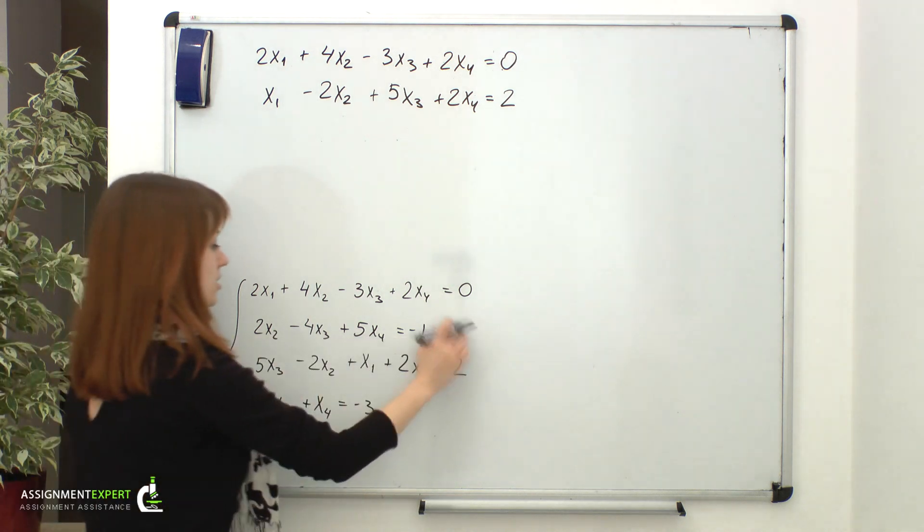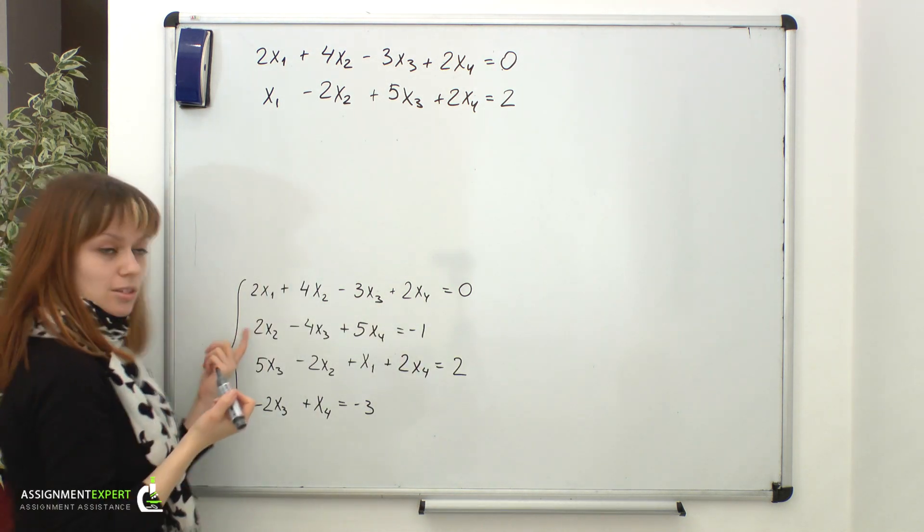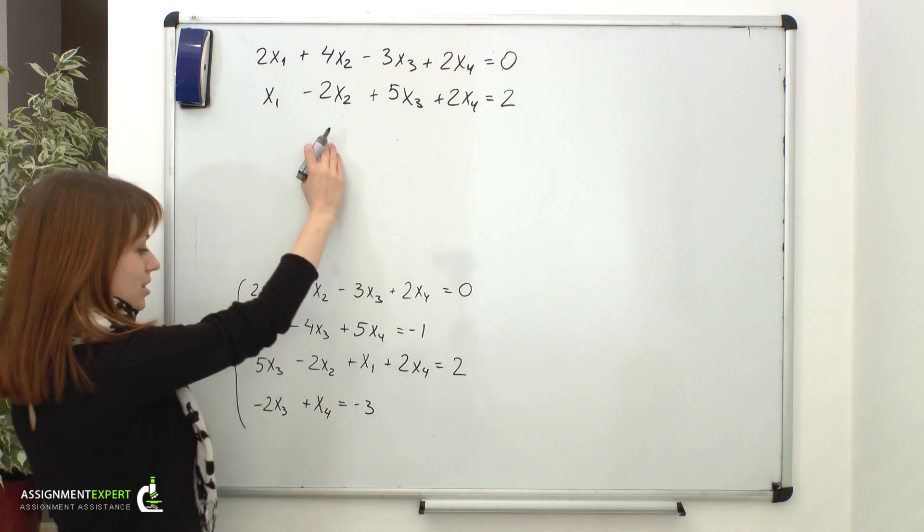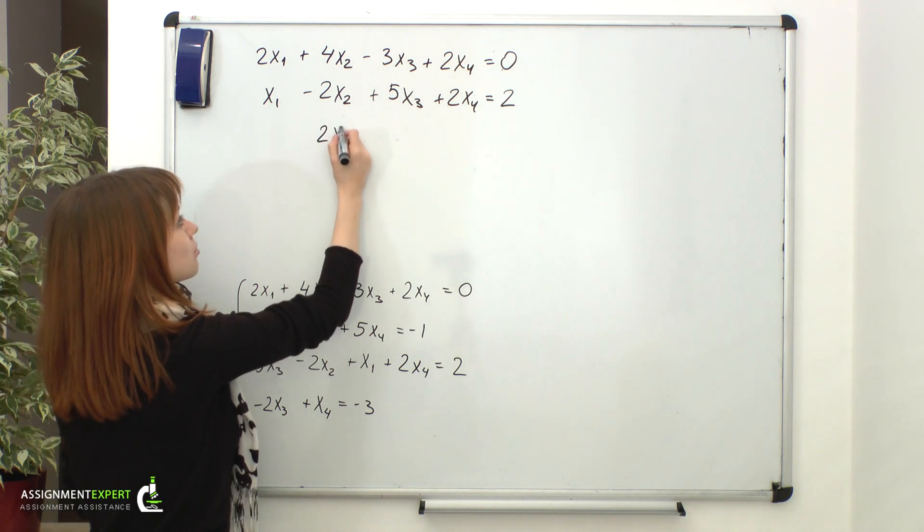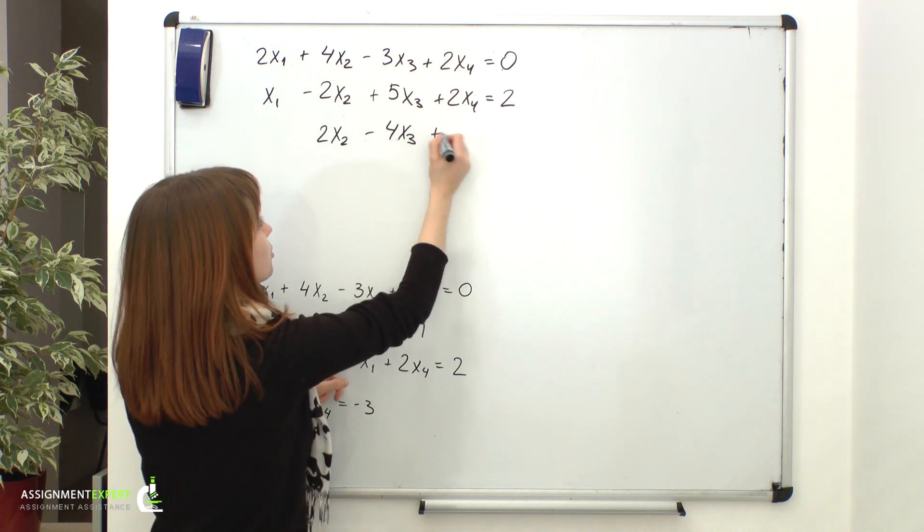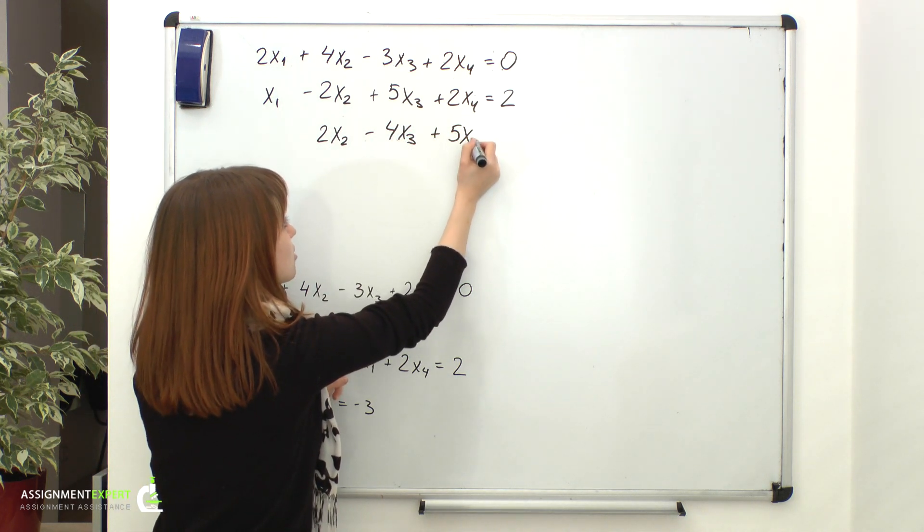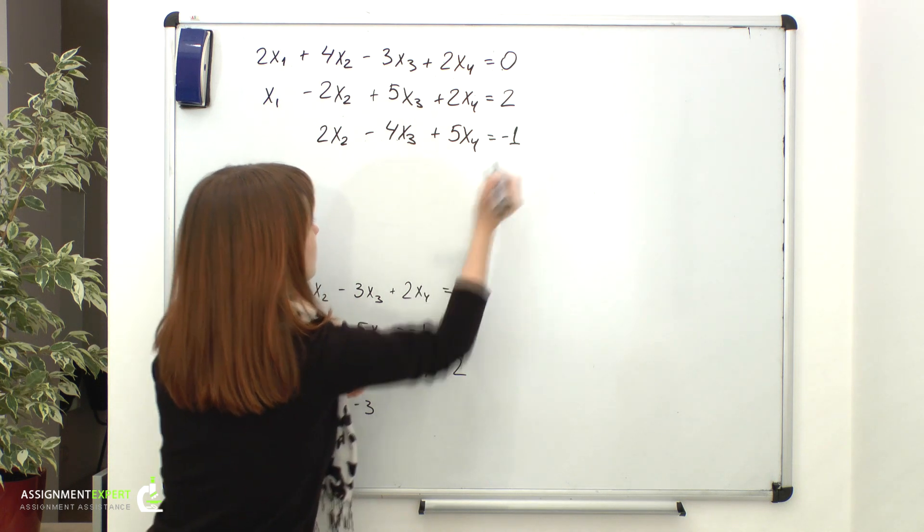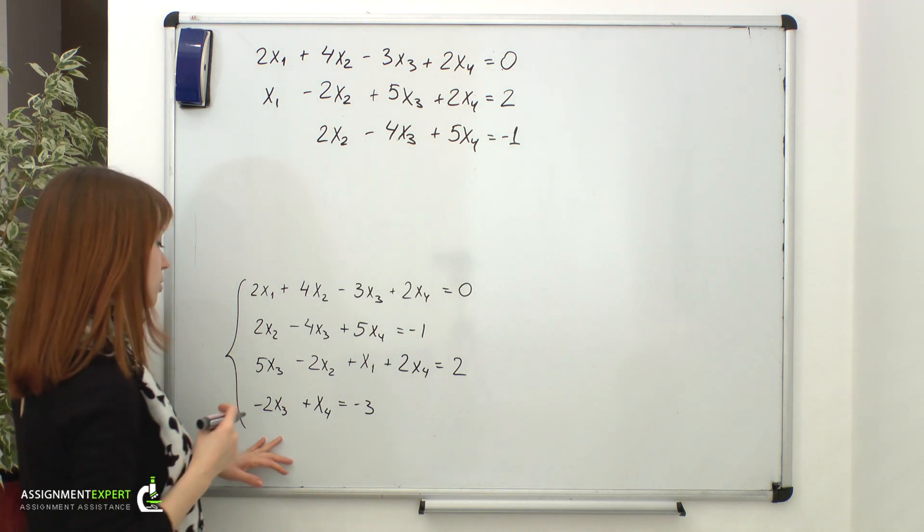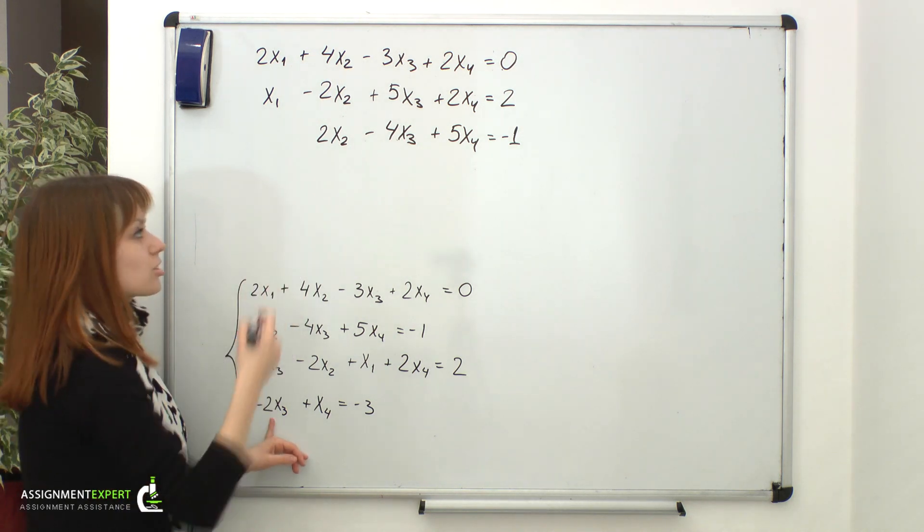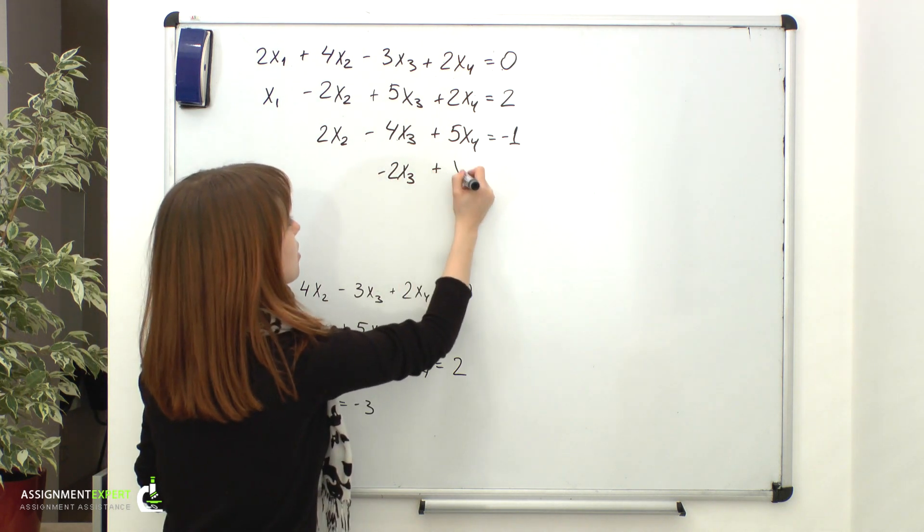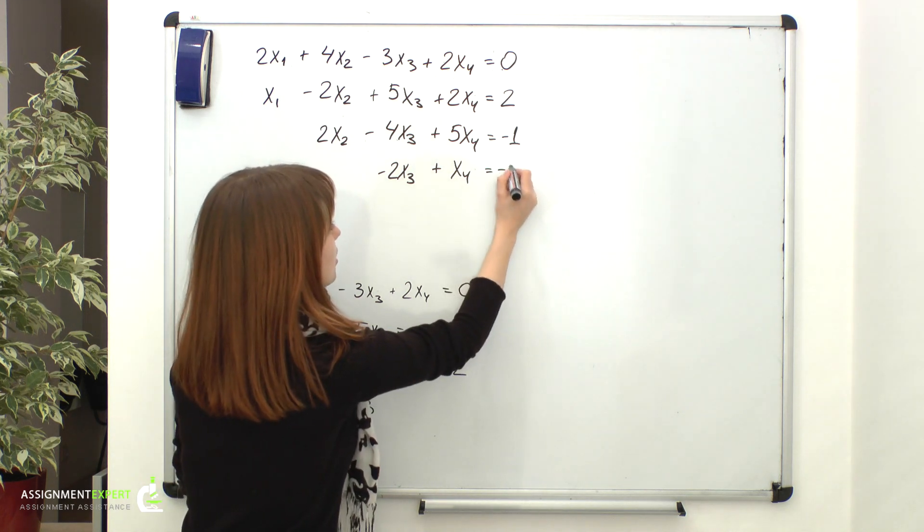Then, I'll put my second equation into the third line. But, as you can see, we don't have x1 here. That is not a problem. I'll simply start with my second column, with 2x2. And then, I go minus 4x3, then I have plus 5x4 and that equals negative 1. And then, my last equation with x1 and x2. I'll just start with the third column. So, I have negative 2x3 plus x4 equals negative 3.